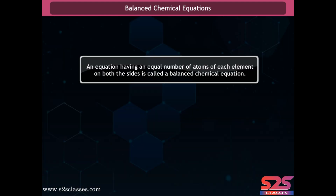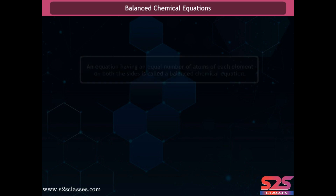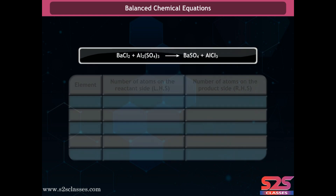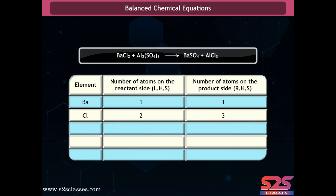An equation having an equal number of atoms of each element on both sides is called a balanced chemical equation. To balance the equation: barium chloride reacts with aluminum sulfate to give barium sulfate and aluminum chloride. First, list the number of atoms of each element present in the unbalanced equation in a table.